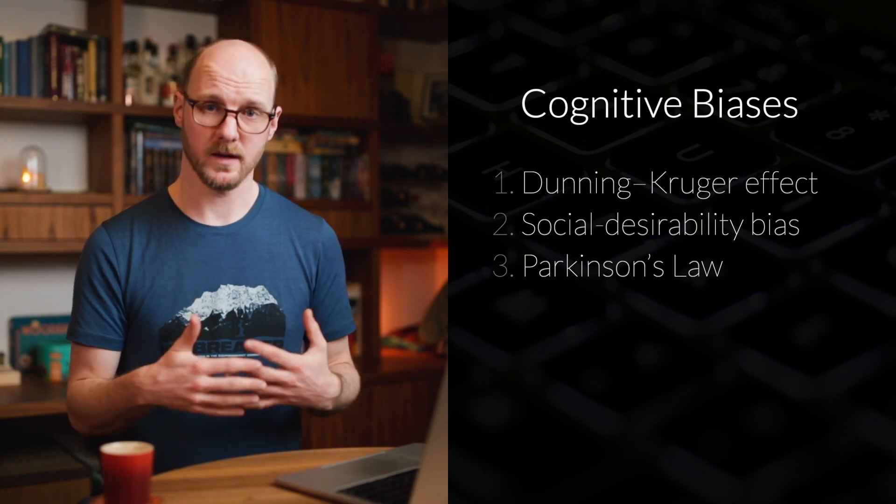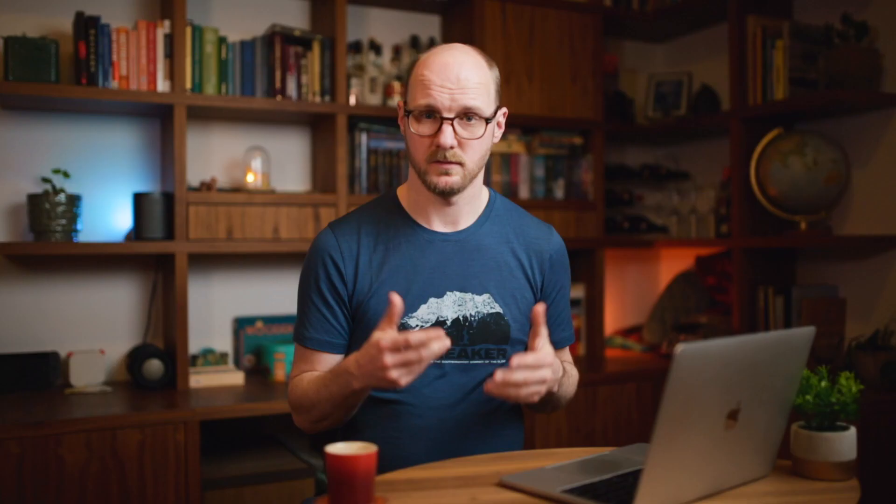Social desirability bias also leads to lower numbers when it comes to time estimation. To counter this, there's the under-promise and over-deliver advice, but it only helps us so much because it doesn't solve the root cause of the problem. And the third one is Parkinson's law, which states that work expands to fill the time we allocate to it. The data shows we almost always underestimate. But even if we would overestimate, Parkinson's law says we would fill this time anyway. So our biology is against us, and we know this.